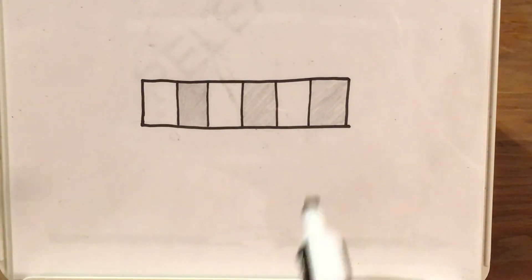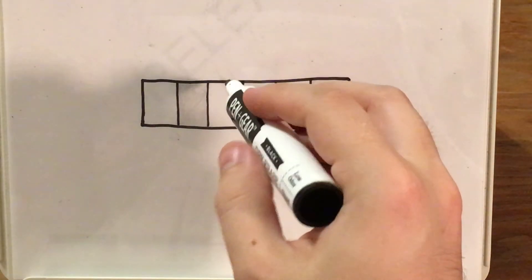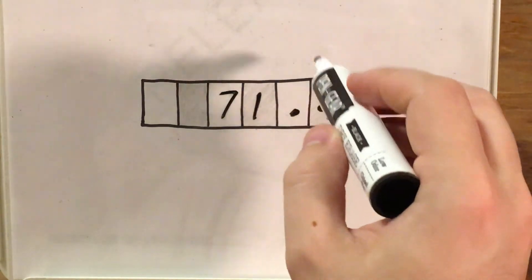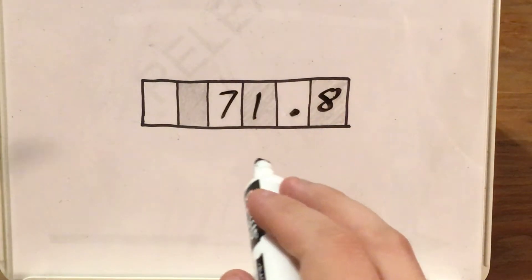So here's a sample gridded response box that I made. And if I want to write the number 71.8 or 71 and 8 hundredths, I actually need to give each digit and the decimal point their own box.